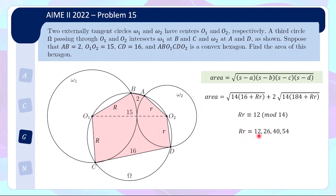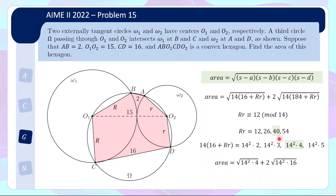So we can write down all the possible values of rR that satisfy the congruence condition. Checking each: if rR is 12 we get 14² × 2; increasing gives 14² × 3, 14² × 4, 14² × 5. There's only one of these where you can take the square root and get an integer — so rR is forced to be 40. And very nicely, putting rR = 40 into the other expression gives 14² × 16, which is also a perfect square. So you just evaluate: 14 × 2 plus 2 × 14 × 4, which is 14 × 10 = 140.